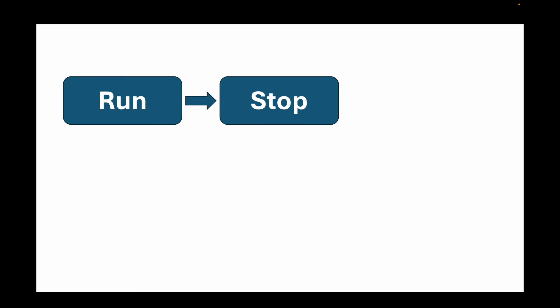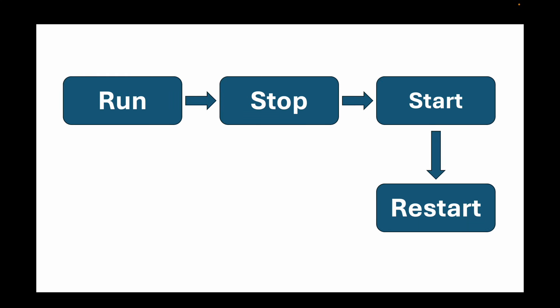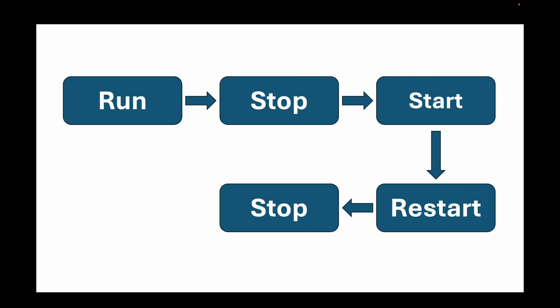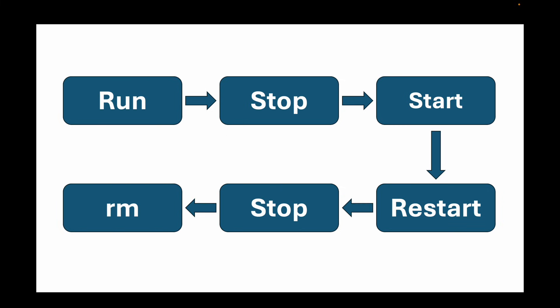To recap the lifecycle: you run a container, you can stop it, start it, and restart it. When you want to delete it, you need to stop it first and then remove it. Now we know how to manage containers — but how do we know what they are doing? Is my web server running correctly? Is my database under heavy load? Let's look at the inspection toolkit.